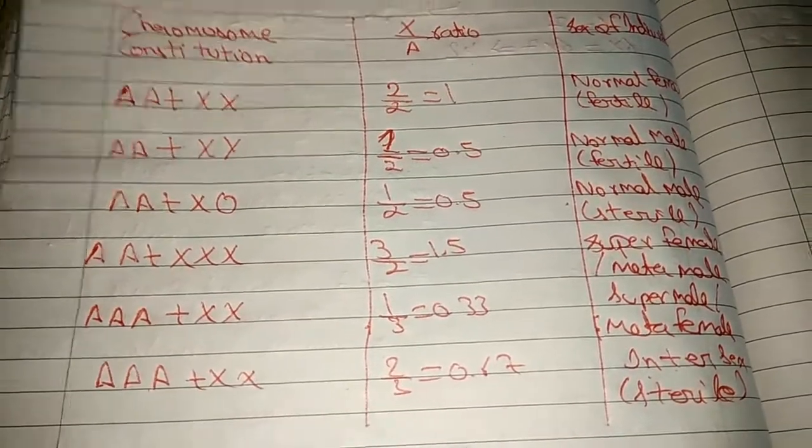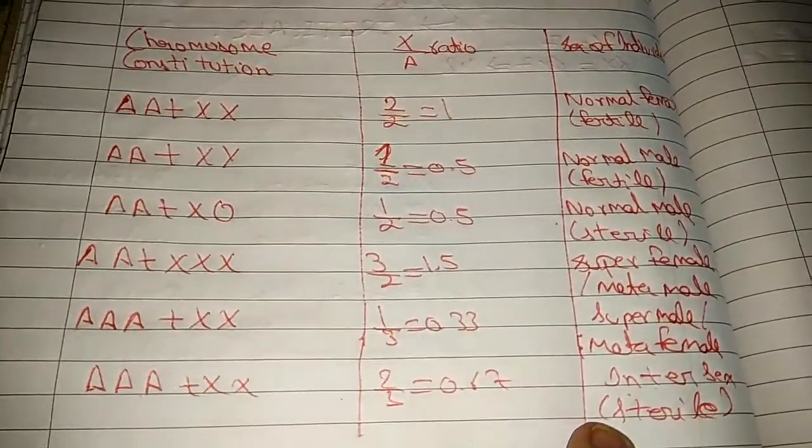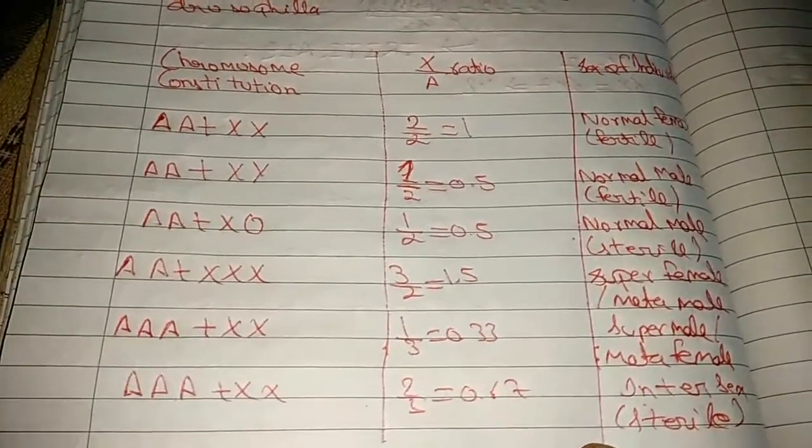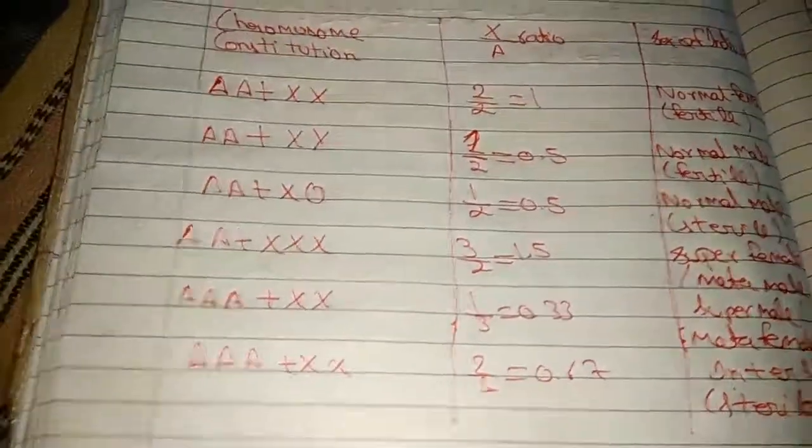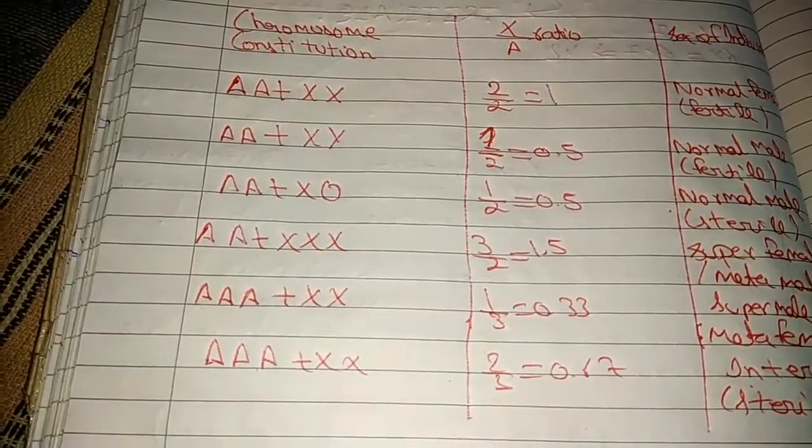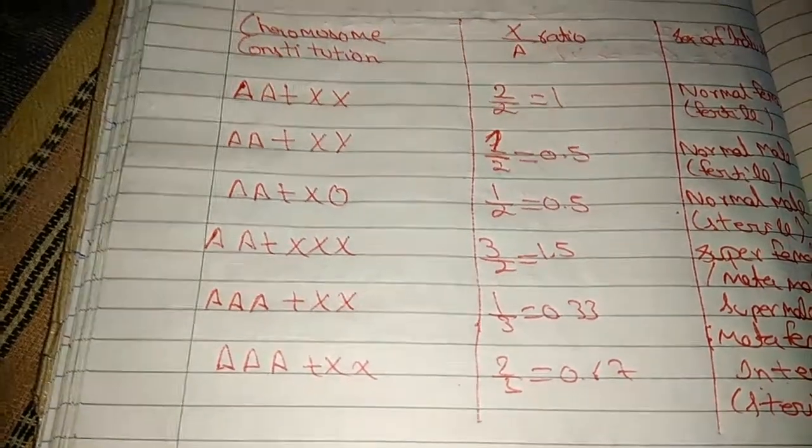AA + XX: 2 by 3 equals 0.67, intersex, sterile. You can see there is no role of Y chromosomes. This is the role of X and autosome in Drosophila.